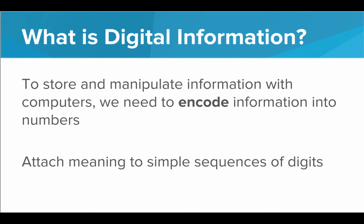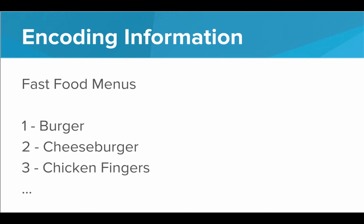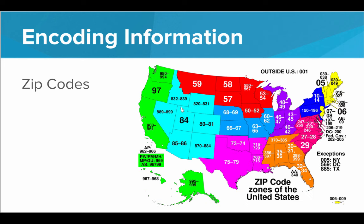And we do this all the time — we see this in the real world. We attach meaning to numbers on fast food menus. You can go to a cashier and order a number two, and you and the cashier both know you're not literally asking for a number two — you're asking for a cheeseburger. So this is an example of encoding information: you're encoding fast food meals as numbers. We also do this with zip codes in the United States, where every state gets its own series of numbers that define exactly where in the country that zone is. This is a version of encoding — we are encoding the location as a zip code.